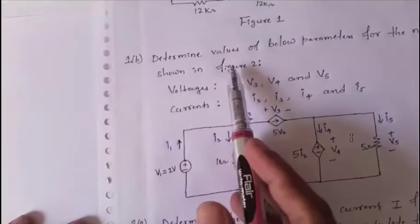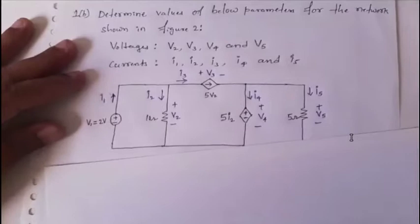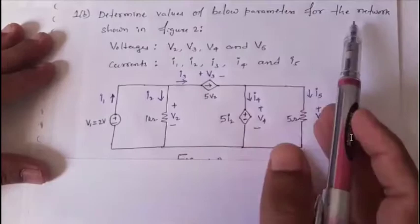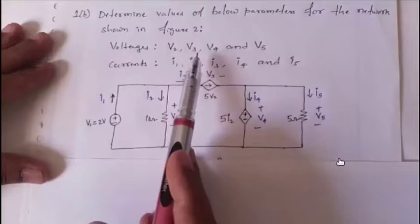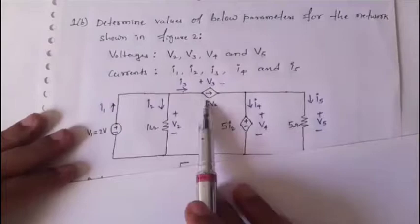The second problem: determine values of v2, v3, v4, v5, i1, i2, i3, i4, and i5 for a network with two dependent sources — one current source and one voltage source. This is simpler than the previous problem.